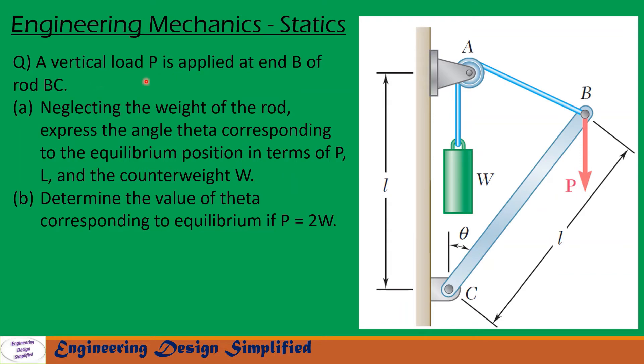Today's problem is: a vertical load P is applied at end B of rod BC. (a) Neglecting the weight of the rod, express the angle theta corresponding to the equilibrium position in terms of P, L, and the counterweight W. (b) Determine the value of theta corresponding to equilibrium if P equals 2 times W.